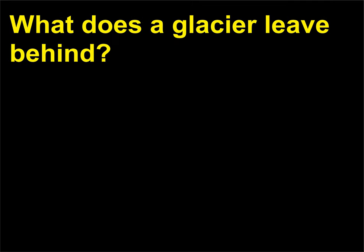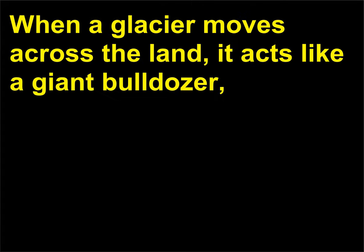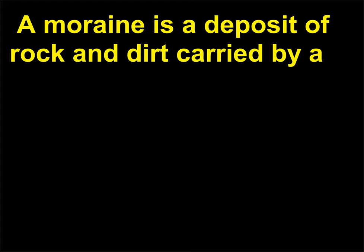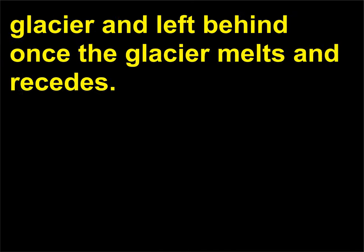What does a glacier leave behind? When a glacier moves across the land, it acts like a giant bulldozer, pushing and collecting rock, dirt, and debris. A moraine is a deposit of rock and dirt carried by a glacier and left behind once the glacier melts and recedes.